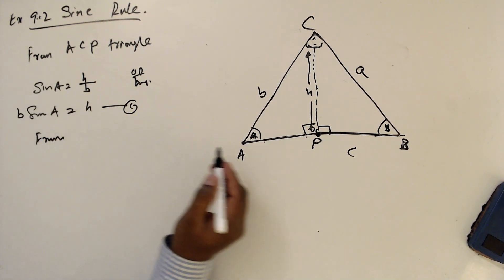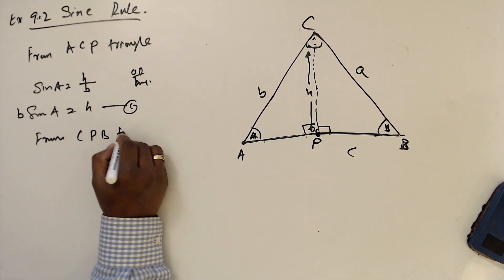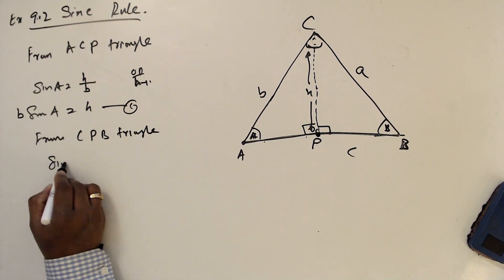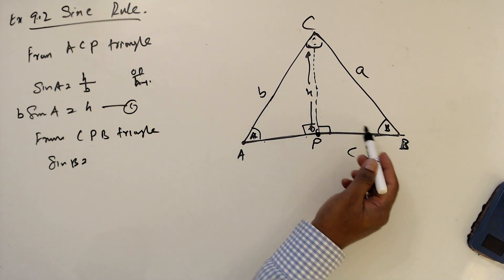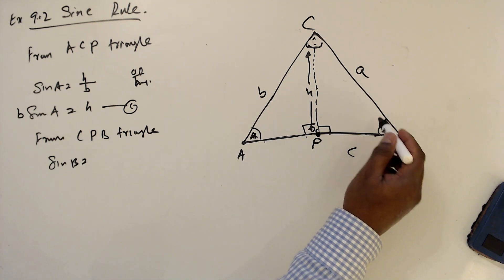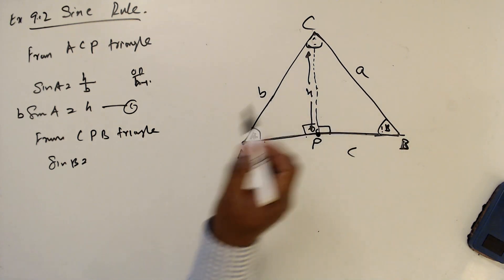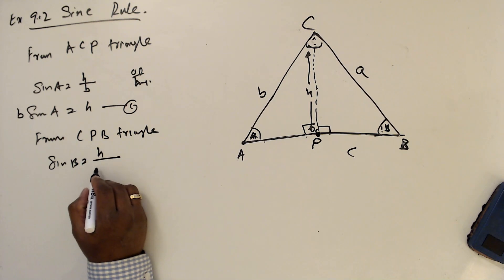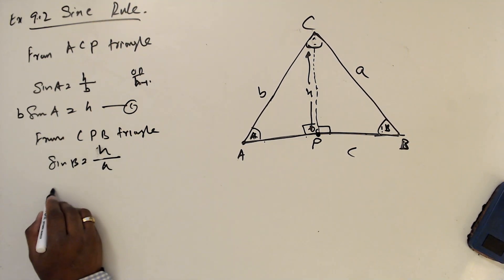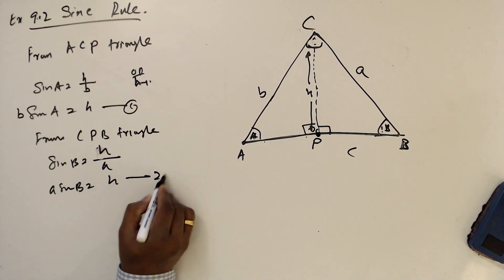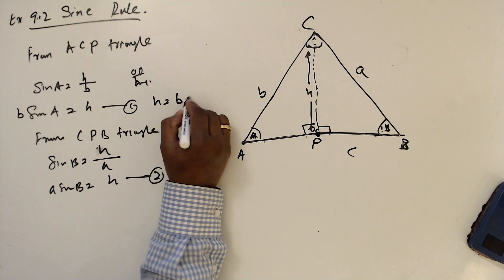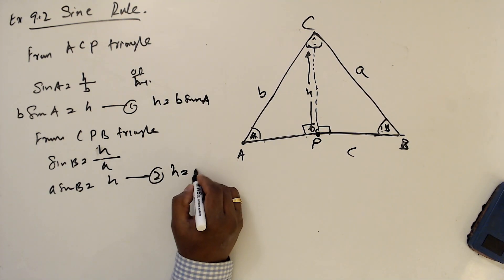Now from triangle CPB: sine B — when you stand at B, the opposite side is H and the hypotenuse is a. So sine B equals H over a. Cross-multiplying gives a sine B equals H. That is equation 2.